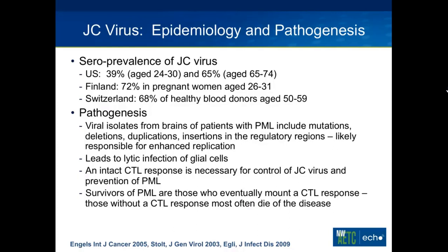Viral isolates from the brains of people with PML include a lot of mutations and deletions, alterations of the regulatory region, and those are responsible for enhancing its replicative capacity and are probably involved in its neurotropism as well. The infection leads to lytic infection of glial cells, and you need an intact CTL response to control the virus and prevent PML. In fact, in people who get PML and recover, almost all of them end up mounting a CTL response, while those that can't usually succumb to their disease.